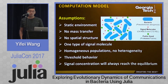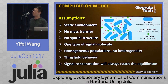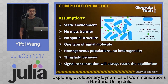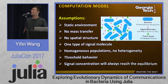Why do we use Julia to build an agent-based modeling simulation to study cooperation in bacteria? It's because Julia is fast and also very efficient. But how could we do that?